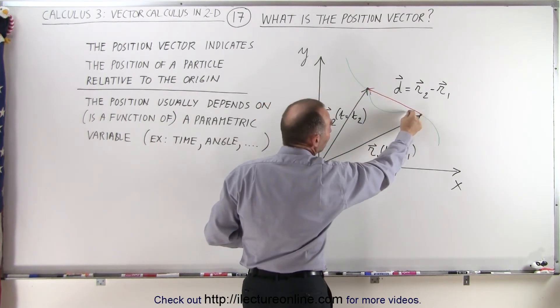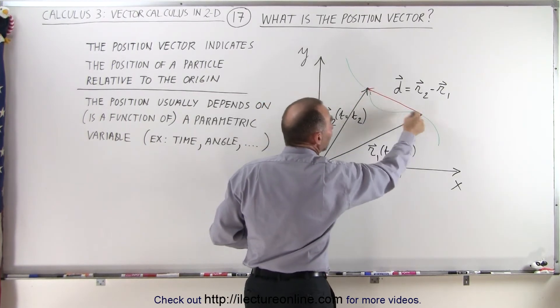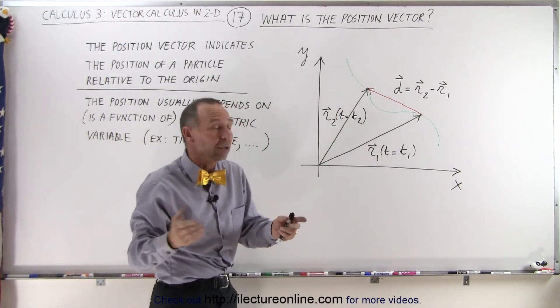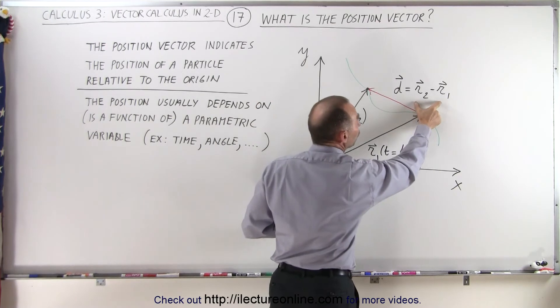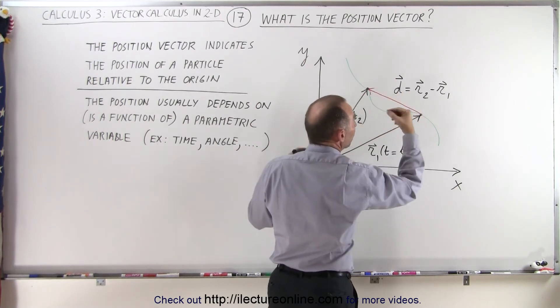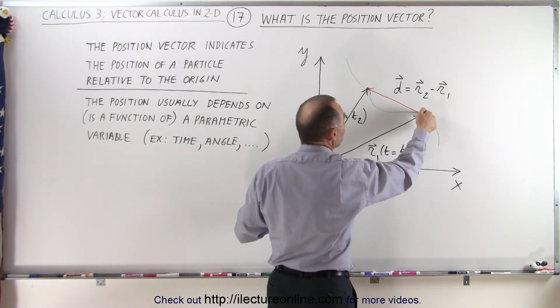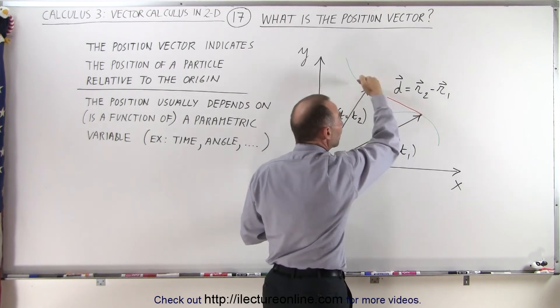Notice the displacement is not the distance covered by the actual path of the particle, but it's the distance drawn by the difference between those two position vectors, and that's called the displacement vector. That's the shortest distance from here to here along that red line.